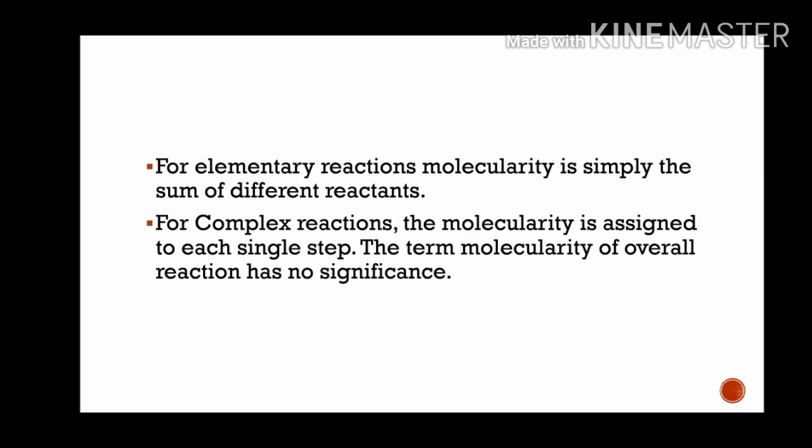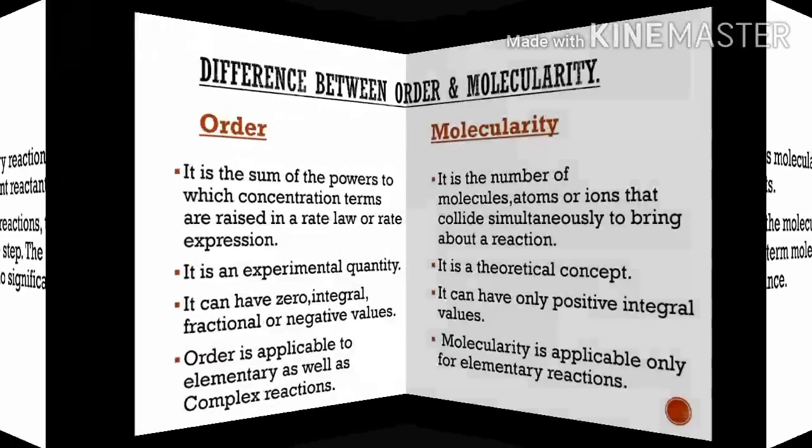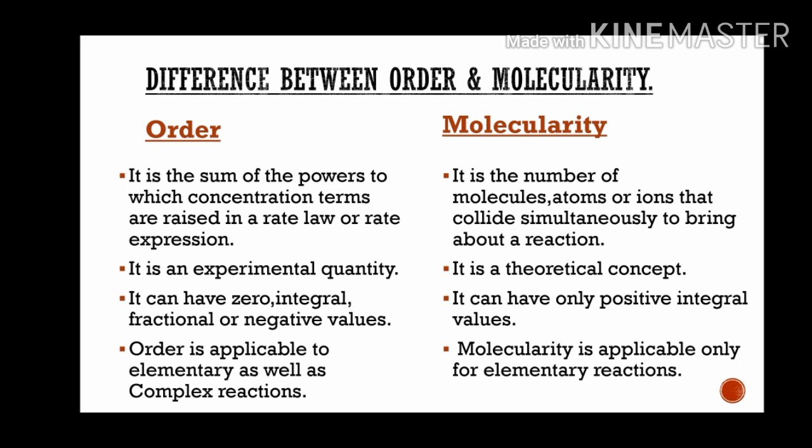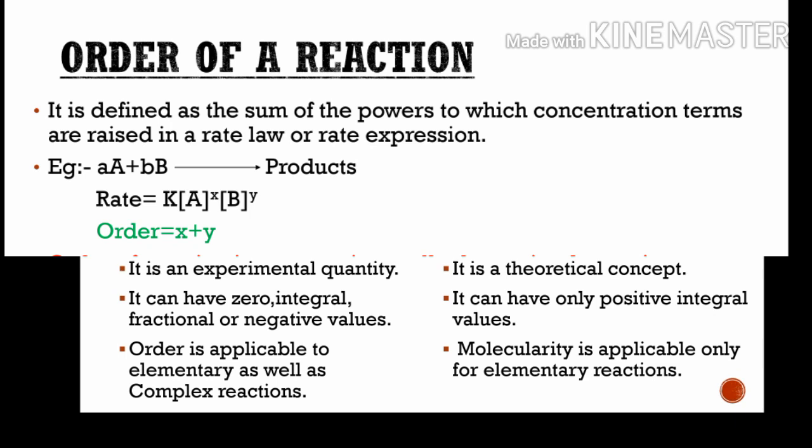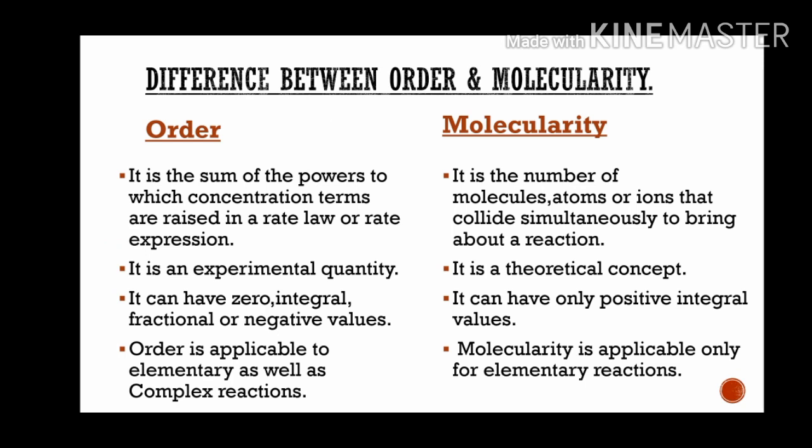Now let us discuss the differences between order and molecularity. Order is the sum of the powers to which the concentration terms are raised in the rate law. Molecularity is the number of molecules, atoms, or ions that collide simultaneously to bring about a reaction. That is the first difference.